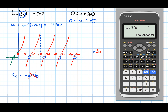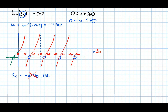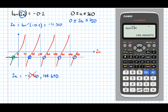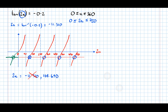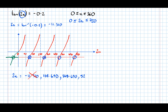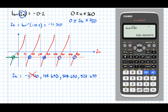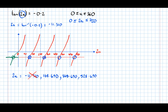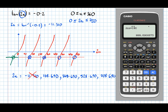Then we've got 2x equals 168.690 — that's the first valid solution. Pressing equals again adds 180: 348.690, that's the next one. Then 528.690, and then 708.690. We're getting close to our limit of 720 there. Pressing equals again gives a value outside the limit, so we stop there.